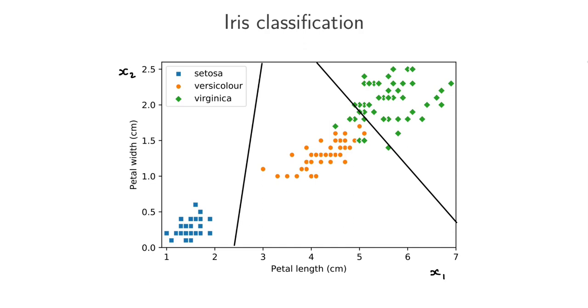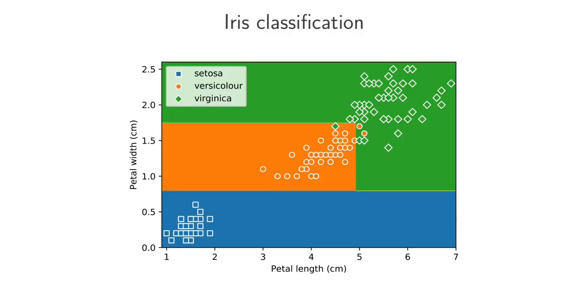Now decision trees, which is also a type of classification model, follows a little bit of a different approach. Instead of having boundaries like these, it will try and break up the input space into blocked regions. So if we train the decision tree on this data set, this is actually the result we could get, something like this.